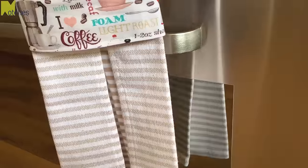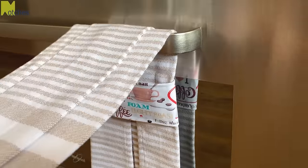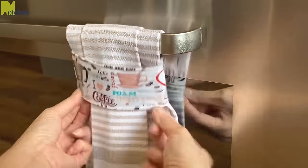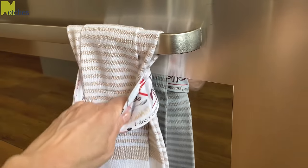To hang the tea towel, simply place the back of it over the handle and then thread the front of the towel through the loop. Adjust it so that the band covers the stitch line going across. To remove, just pull down on the band.